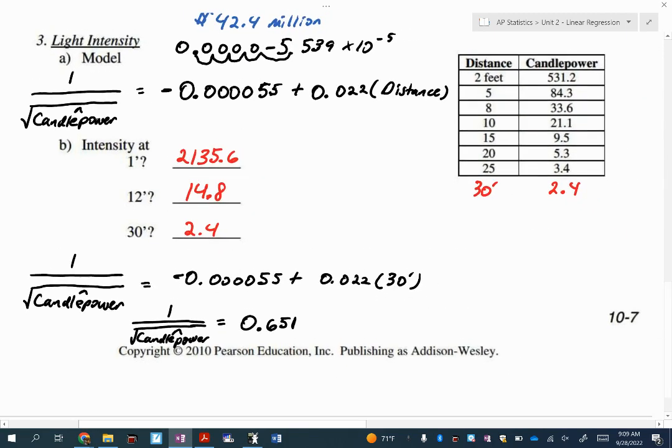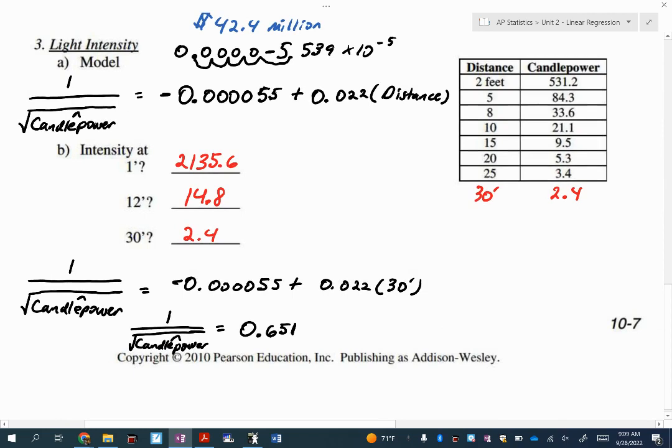If we look at that compared to the original table, even the 30 feet looks like it kind of makes sense. That's extrapolation, so I want to avoid extrapolating whenever I can. But the 12 is actually within my range of data that I started with, the two feet to 25 feet. So that 12 feet, if I'm going to pick one to be most confident about, it would be the 12 foot one because it's actually within my data range. The one foot is close, but it's still technically extrapolating because I started with two feet.